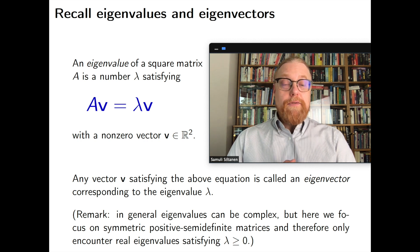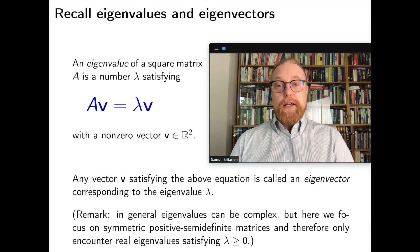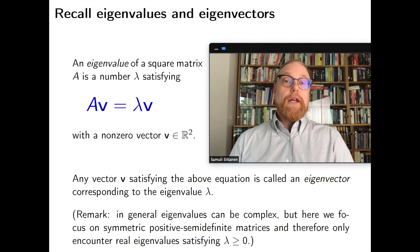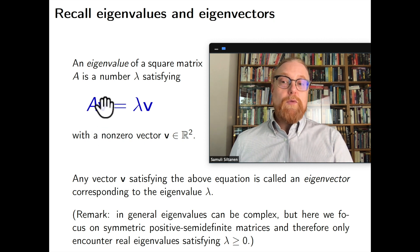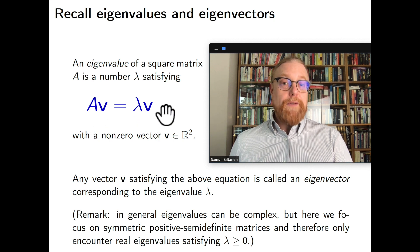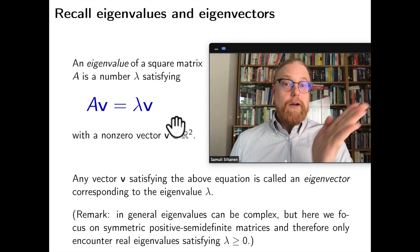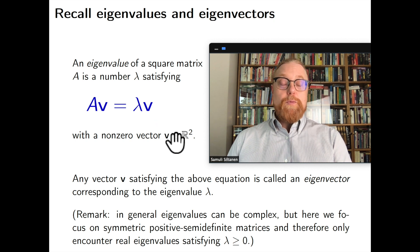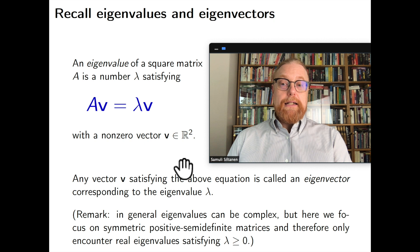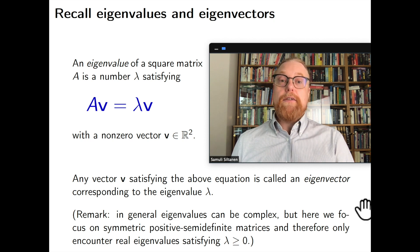Then we will derive the singular value decomposition for this specific matrix we have. For that we need eigenvalues and eigenvectors. Those are for a given matrix. Those are some very special vectors and numbers that behave in this way. Then when we multiply the vector, the eigenvector v with the matrix A, it actually just is a multiple of v. So the matrix A doesn't turn the vector v to any direction. And it's a very useful technique for many purposes to calculate the eigenvalues and eigenvectors of a matrix.